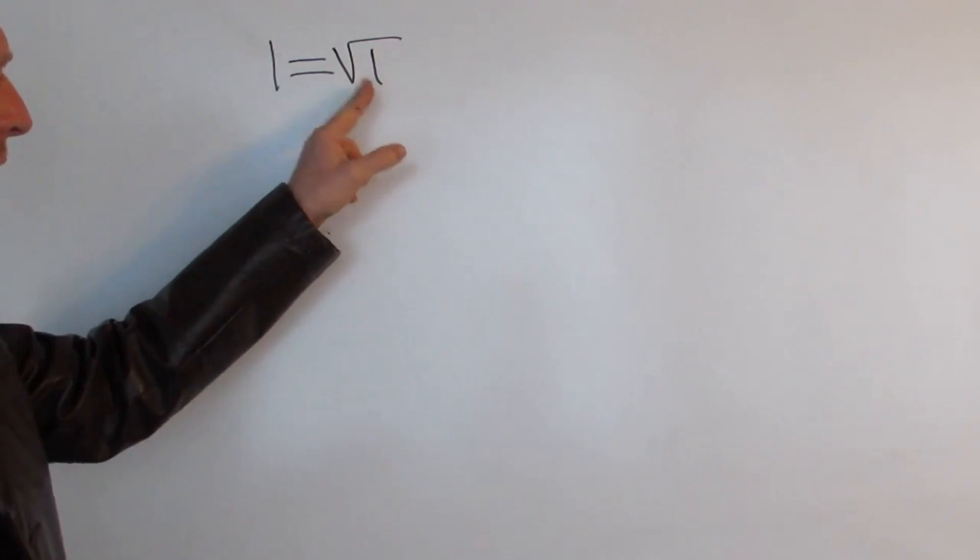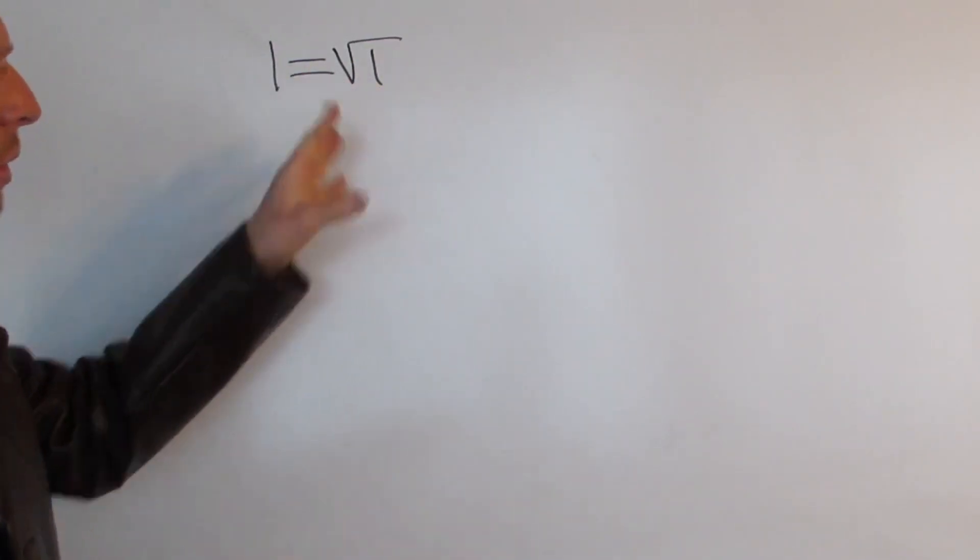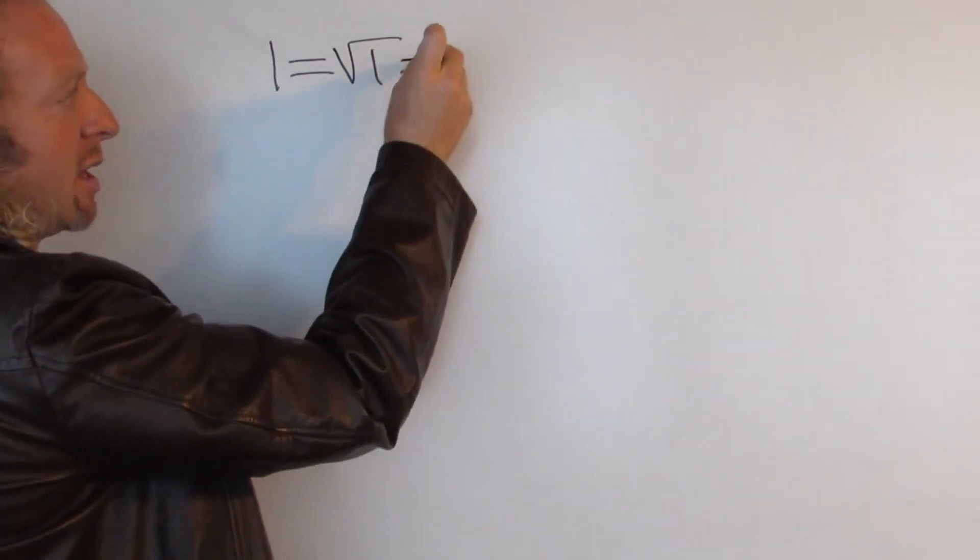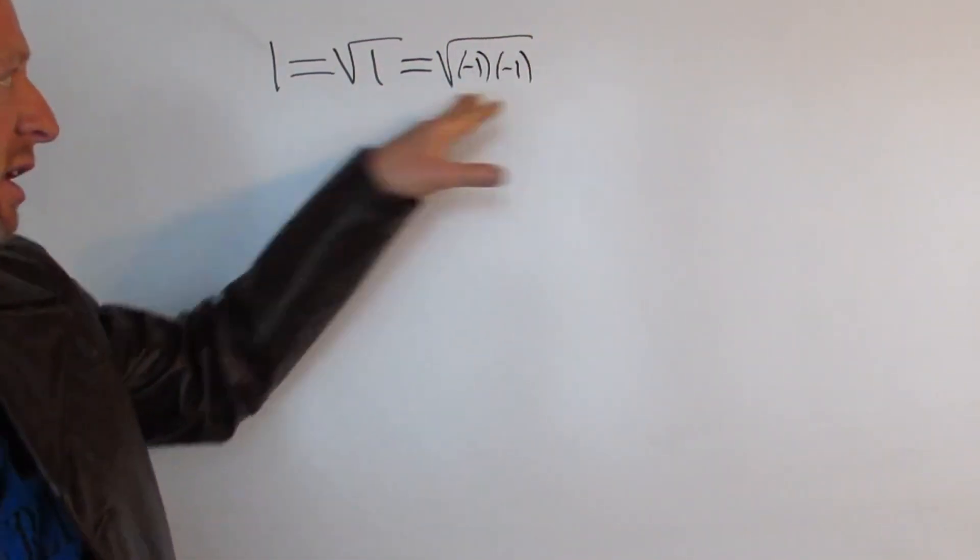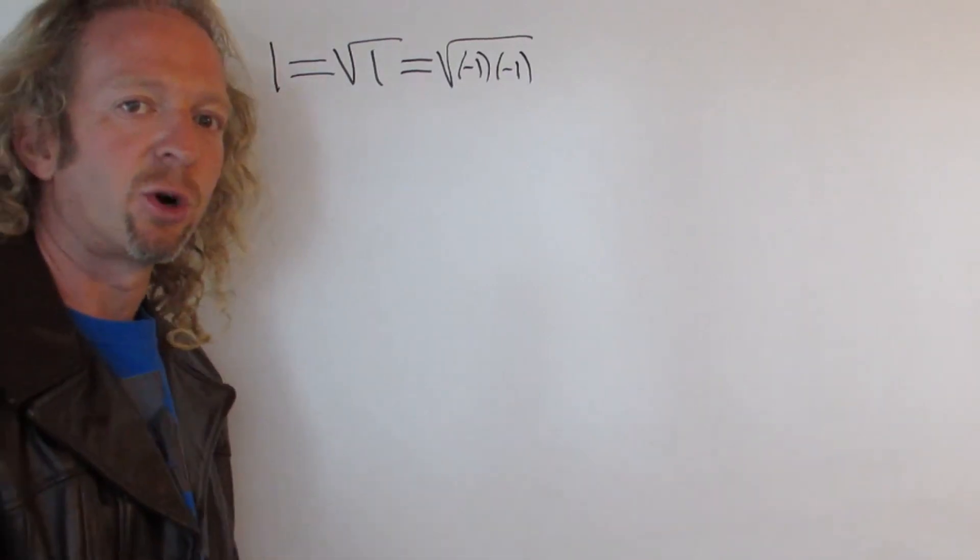And then a negative and a negative is a positive. So what you can do is write this as negative 1 times negative 1. Because negative 1 times negative 1 is 1. So there's no problems there.